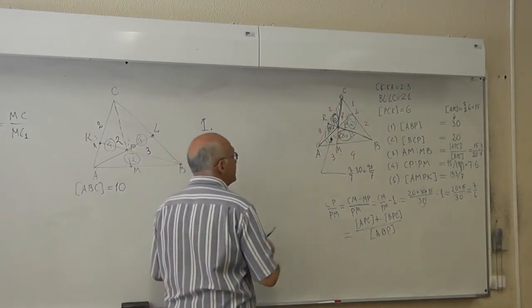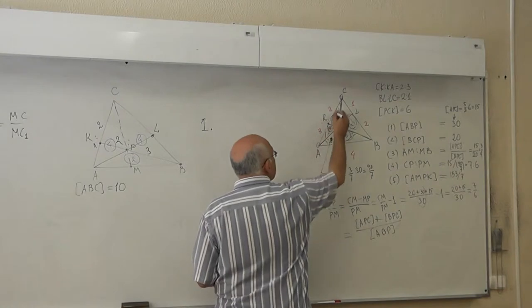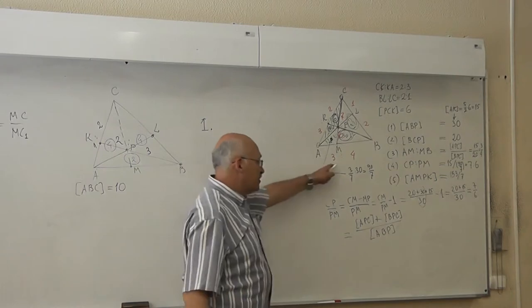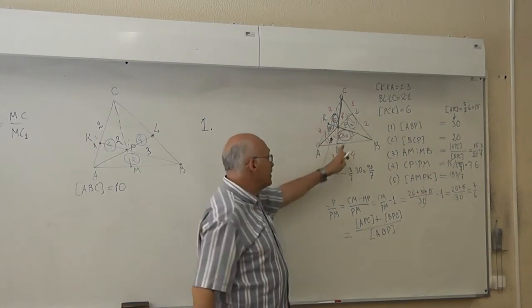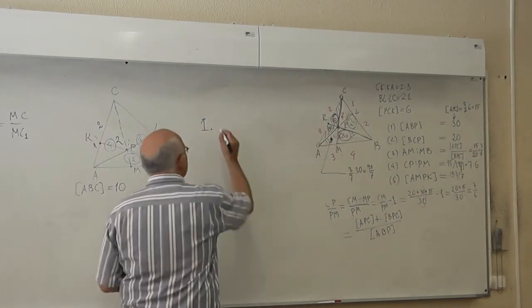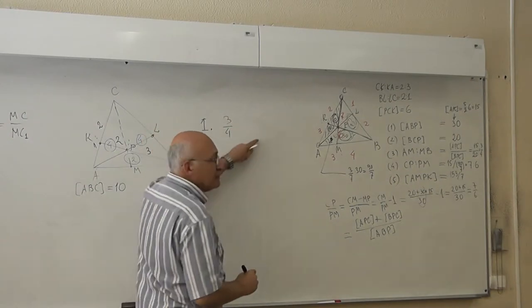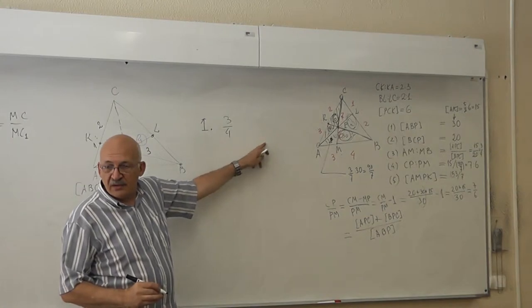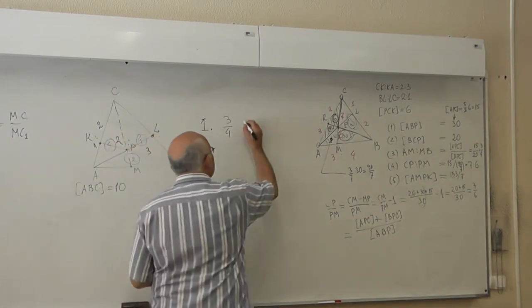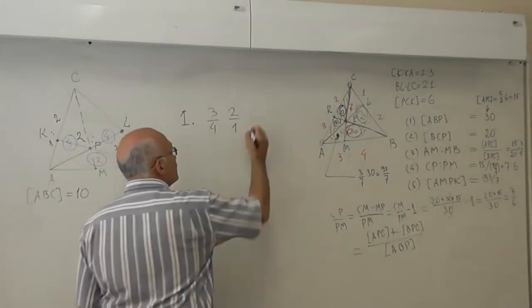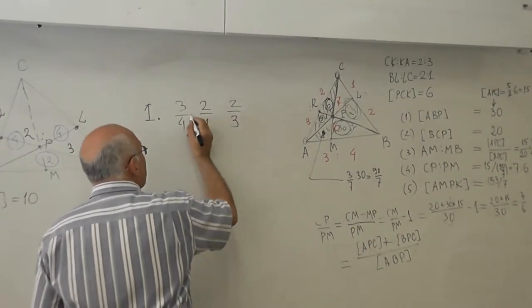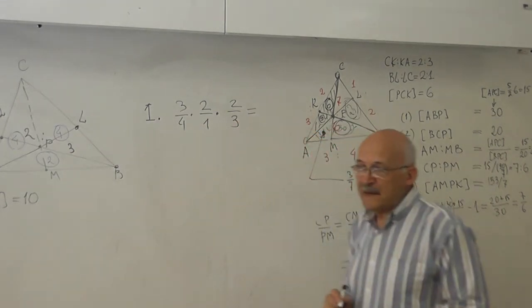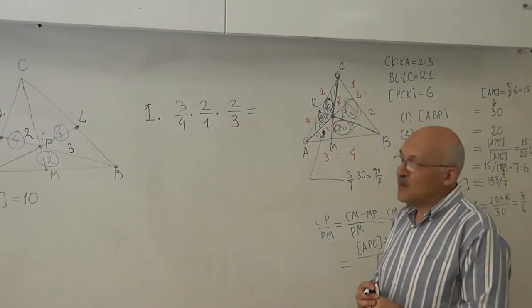I take this, I will go around the triangle and write down the ratios. Three to four. Then, what next? Two to one. Two to one. And? Two to three. Two to three. And then I multiply them, and what do I get? You will get one. One.